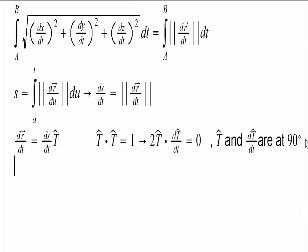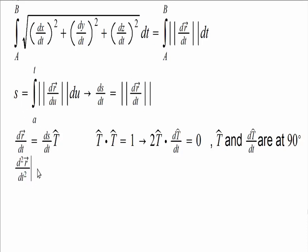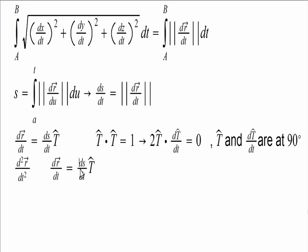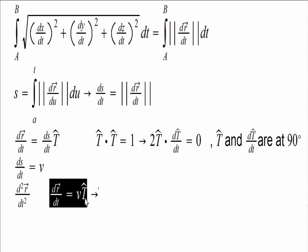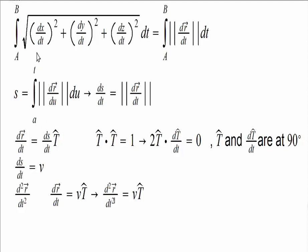Our objective is to obtain the components of the acceleration vector in the direction of the tangent and the normal. We have velocity v = dr/dt = v·t̂. So if we compute the second derivative using the product rule — one part is scalar, the other is vector — we get dv/dt times t̂, which is the tangential component, plus v times d(t̂)/dt, which is along the normal direction. But d(t̂)/dt may not itself be a unit vector.